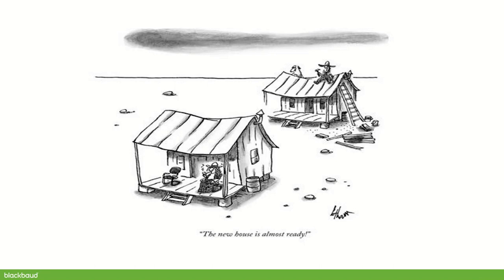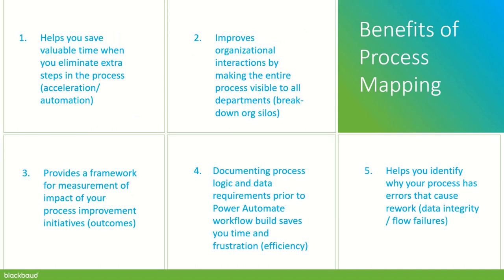Automation is just a small part of this, but it's an important piece. If you don't understand the big picture of the business process first, you can invest your time in the wrong things. The benefits of process mapping are: it helps you save valuable time by eliminating extra steps — steps that with automation can be completely removed because you can trust the robot to do things correctly. It can make the process visible and shine a light on gaps or a lack of shared understanding across different teams and departments.